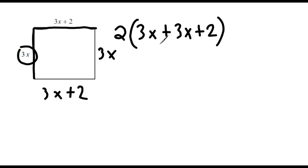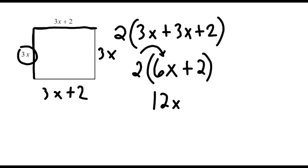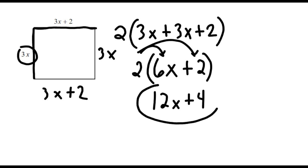First, we look inside the parentheses and combine 3x and 3x, which are like terms, giving us 6x plus 2. We cannot combine the constant 2 with 6x. Now we use the distributive property and multiply 2 by 6x, which is 12x, and then multiply 2 by 2, which is 4. So 12x plus 4 is the algebraic expression that represents the perimeter of the shown rectangle.